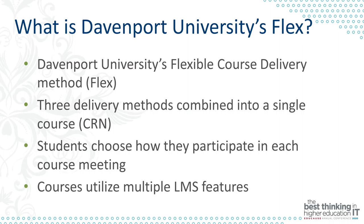Students can choose how they attend each course meeting as their circumstances permit. For example, a course that meets two days a week on Mondays and Wednesdays: a student could come to class in person in an in-seat classroom for the Monday meeting, and then, if their circumstances or preference changes for that Wednesday class, they could participate through synchronous online technology, or if they are unable to make that Wednesday meeting, they could attend on their own time through the asynchronous online option.